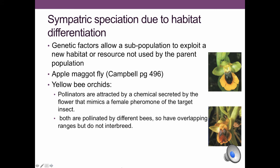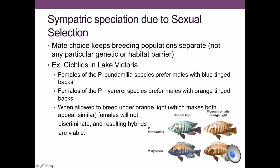You can also have sympatric speciation due to habitat differentiation. Here we have two different species of bee orchids: one species secretes a hormone that attracts one species of bee, and the other secretes a hormone that attracts a different species of bee. Because they don't attract the same bee species, they can't be fertilized by each other.